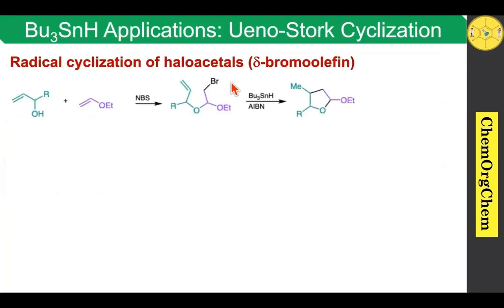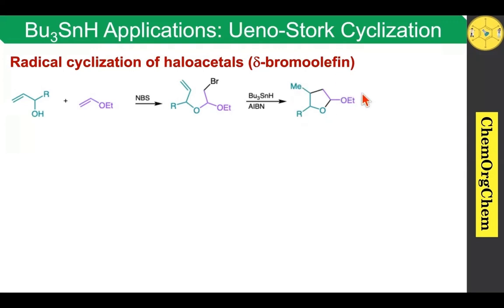The first application in this video is Ueno-Stork cyclization. The radical cyclization of halo acetal is called Ueno-Stork cyclization. According to this reaction, allylic alcohol reacts with electron-rich alkene in the presence of NBS, which produces the corresponding bromoacetal. Then, when you use tributyltin hydride and AIBN, which produces the radical cyclized product. The cyclized product is tetrahydrofuran.